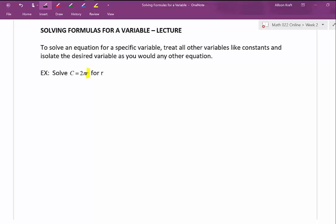So a parallel problem to this would be 10 equals 2 times 6 times r. I've replaced all the other variables with constants. To solve for r, I would need to get rid of this multiplication by 2 and multiplication by 6. To undo that multiplication, I would divide by each of these. We do that to both sides. And that would isolate the r for us. We want to do that same type of thing with this problem.